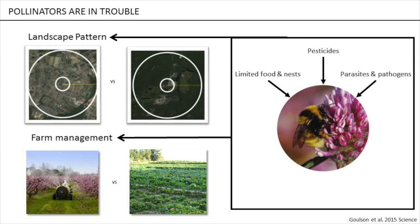Then at farm scales, management decisions could influence a bee's exposure to pesticides. And ecologists have recognized that these two scales probably don't exist in isolation and that they interact.